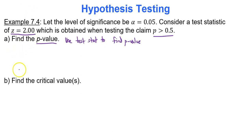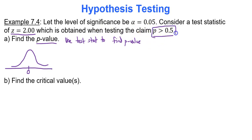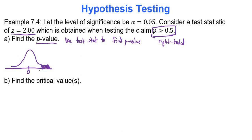Let's draw our bell curve. We're dealing with z-scores, so the mean is 0. The claim p is greater than 0.5 would be the alternative hypothesis, and greater than indicates a right-tailed test. On the bell curve, shade the right tail. The value that separates this right tail from the rest of the graph is the test statistic of 2.